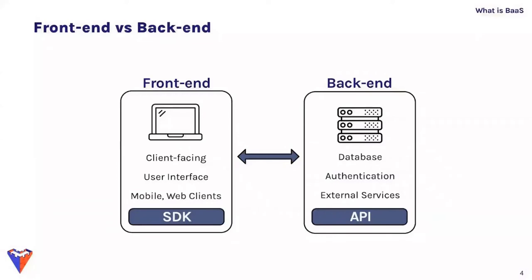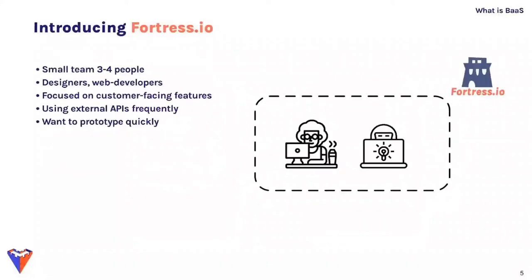A web application can be thought of in two parts: the front end and the back end. The front end is the client-facing code that runs in browsers and mobile apps, responsible for the user interface. The backend stores the information needed by the front end in the database, keeps track of changes from user interactions, handles user authentication, and manages connections to external services.